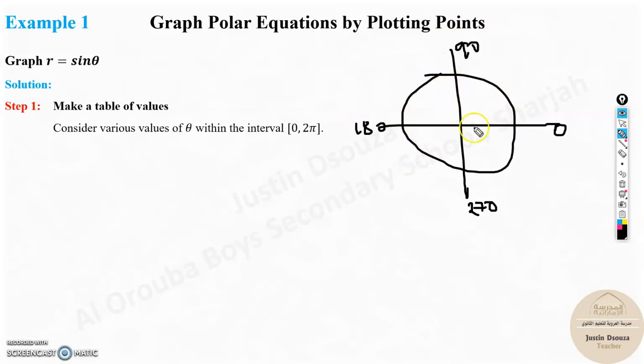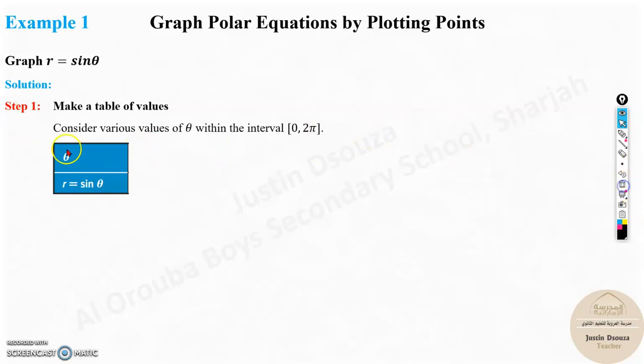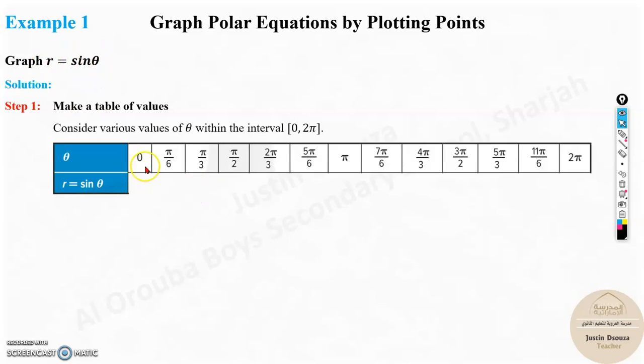You need to plot points. Take values for theta from zero to 360. That is why within the interval zero to 2π. This means it is from zero to 360 degrees. Make a table where theta is to be assumed, put it in this equation and find the r value. We have taken it in radians, but you can make the table even in degrees.